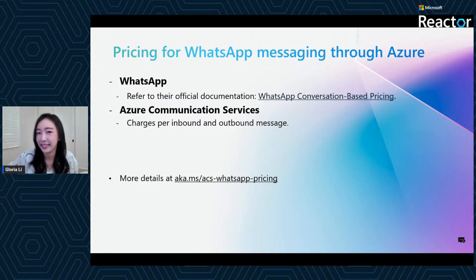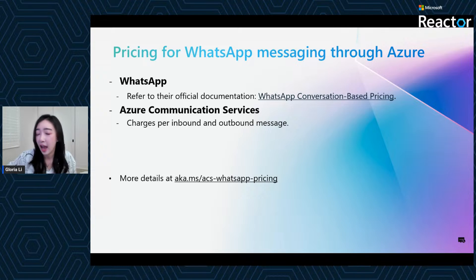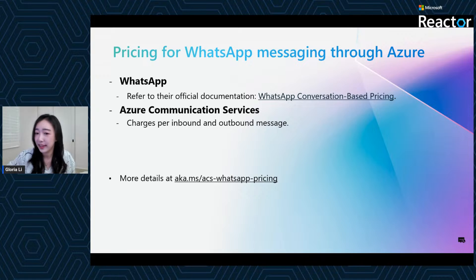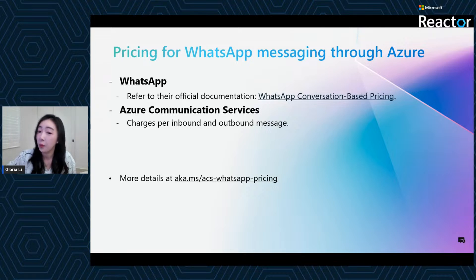Let's wrap up with a quick look at pricing. There are two components when using WhatsApp messaging through Azure Communication Services. First, there is Meta pricing — Meta charges based on a conversation-based model where you pay for every 24-hour messaging session. Sessions are categorized as marketing, utility, authentication, or service, each with different rates depending on country and volume. You can find full details on Meta's pricing page. Second, Azure adds a flat rate for both inbound and outbound WhatsApp messages — for every message you send or receive through ACS, you pay a small fee on top of Meta's charges. Together this gives a predictable, usage-based model that scales with your messaging volume. For the latest details, refer to aka.ms/acs-whatsapp-pricing.